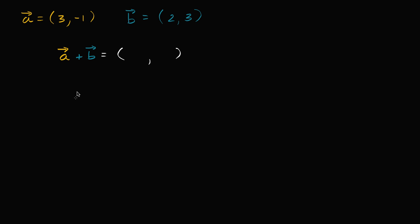The convention is, if we're taking the sum of two vectors, we can just add up their x components to get our new x component, and add up their y components to get the new y component. So the x component of vector a plus vector b is going to be three plus two, which is five. And the y component is going to be negative one plus three, which is two. So the resulting vector is five comma two. That was pretty straightforward.